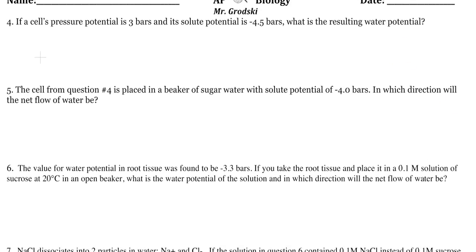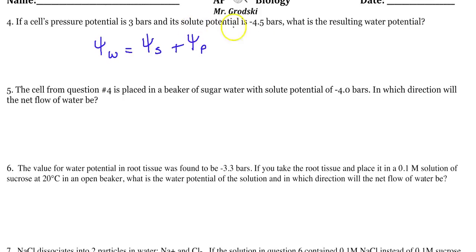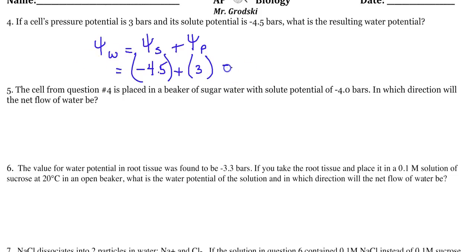Question 4: The cell's pressure potential is three bars and the solute potential is negative 4.5 bars. Water potential equals negative 4.5 plus 3, which gives negative 1.5 bars.